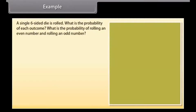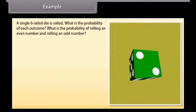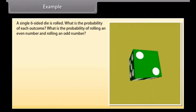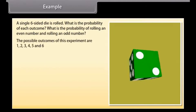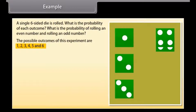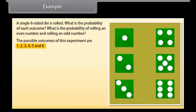A single six-sided dice is rolled. What is the probability of each outcome? What is the probability of rolling an even number and rolling an odd number? The possible outcomes of this experiment are 1, 2, 3, 4, 5, and 6.